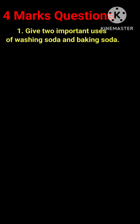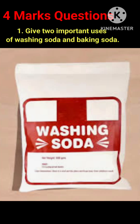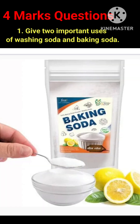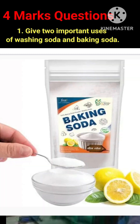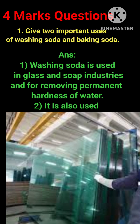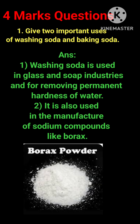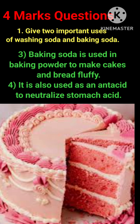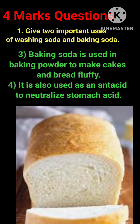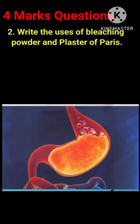Four-mark questions. Question 1: Give two important uses of washing soda and baking soda. Answer: Washing soda is used in glass and soap industries and for removing permanent hardness of water. It is also used in the manufacture of sodium compounds like borax. Baking soda is used in baking powder to make cakes and bread fluffy, and as an antacid to neutralize stomach acid.